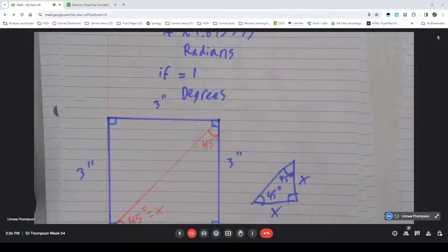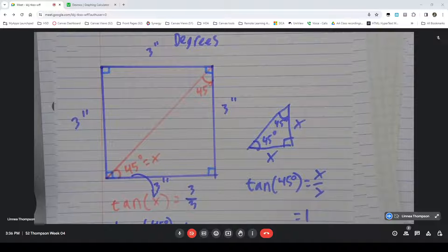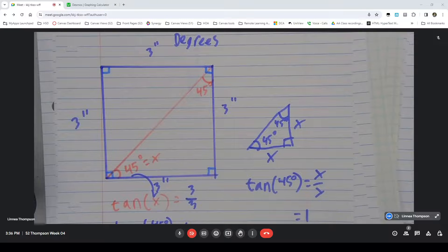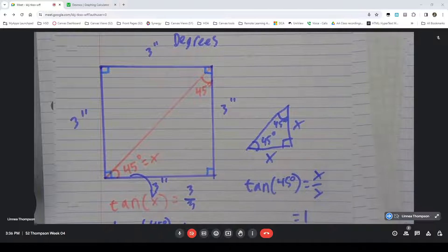So that's why this works. And we call this 45-45-90 triangle a special triangle because it has this property and because those sides match. But that's why this works.